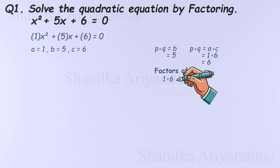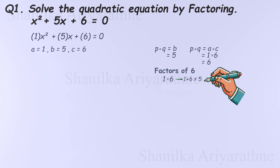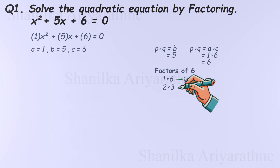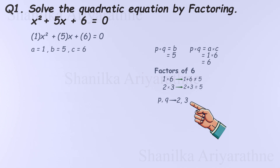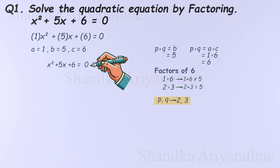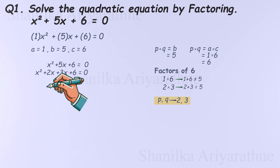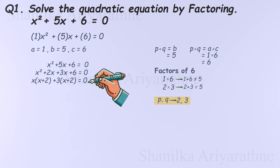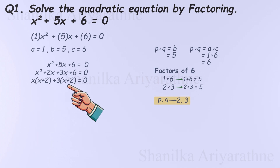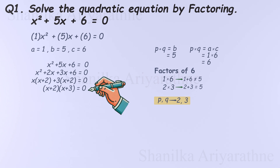1 times 6 equals 6, but 1 plus 6 is 7, not 5 — so this pair doesn't work. Next, 2 times 3 also equals 6, and 2 plus 3 is 5. So the numbers are 2 and 3. Now let's rewrite the equation using p and q. Since 5x can be written as 2x plus 3x, we rewrite the equation as x-squared plus 2x plus 3x plus 6 equals 0. Next, we group the terms and factor out the common factors. Since x plus 2 is a common factor, we factor it out.